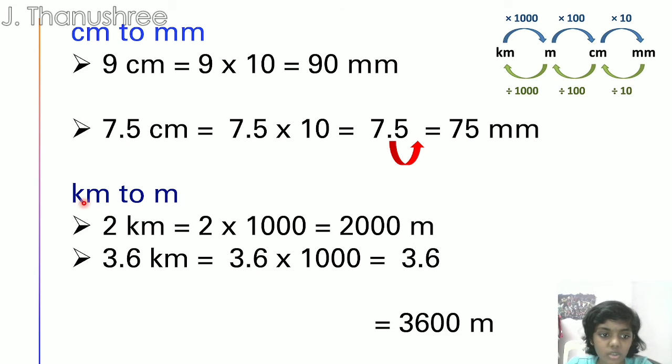Now we are going to do km to m. 2km equals to 2 times 1000. We are multiplying 2 by 1000 because km to m is times 1000. So the answer is 2000m.